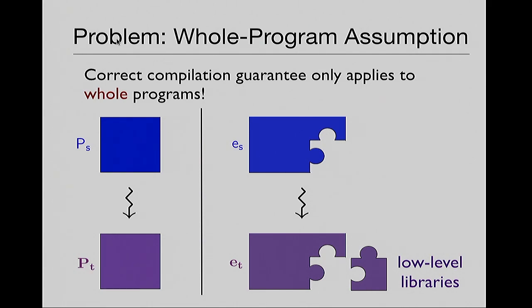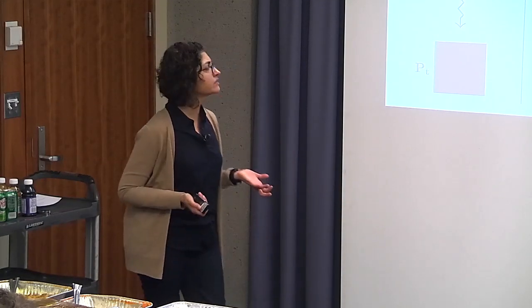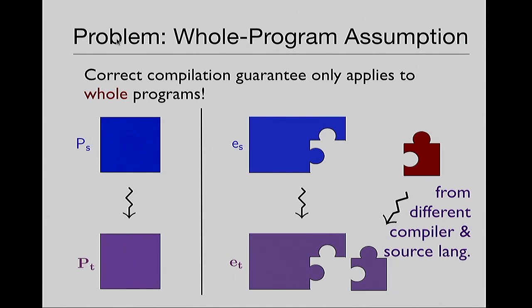If you compile a source component — my word for just 'not whole program' — down to a target component, you almost always end up linking with some sort of low-level code, some low-level libraries, the runtime system, et cetera. More generally, these days we write a lot of multi-language software. We combine code written in completely different languages, compiled down to the same target and then linked. The problem with the papers I listed is that they don't take this scenario into account. This is how we actually use our compilers, and there's something missing in their compiler correctness theorems.